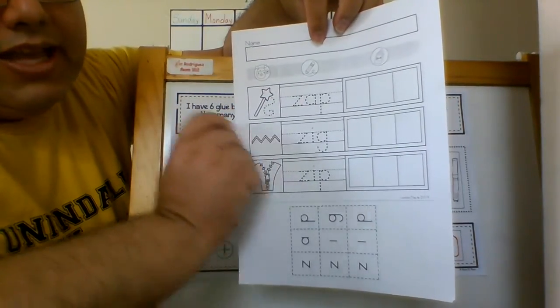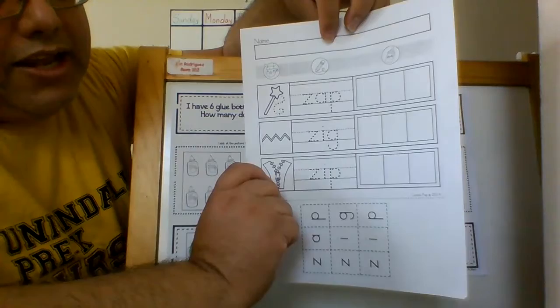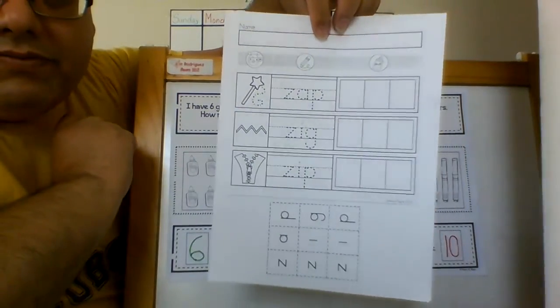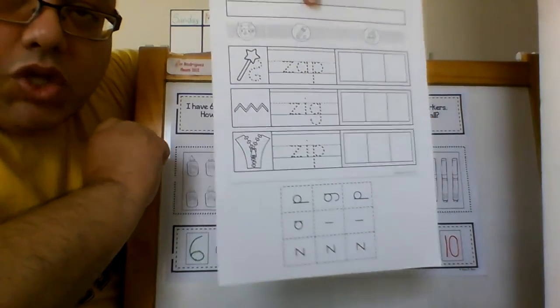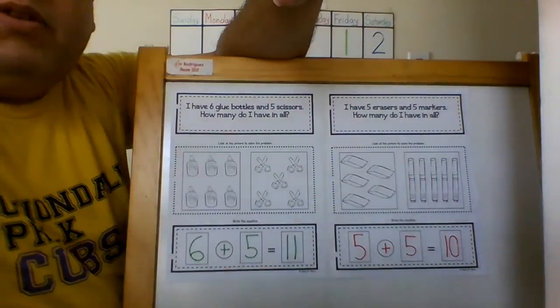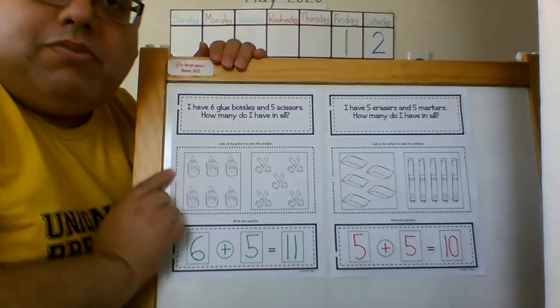zap, zig as in zigzag, and zip as in zipper. So these are activities that you can do at home as well as math word problems.